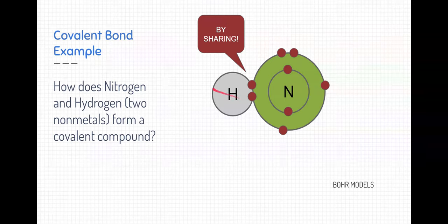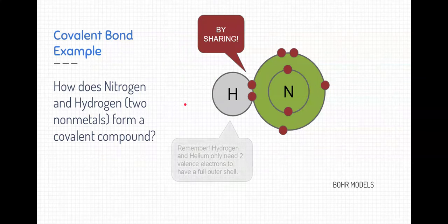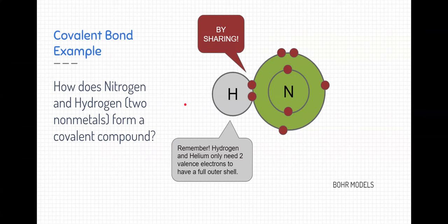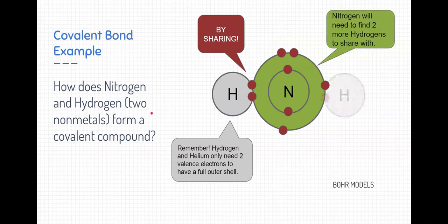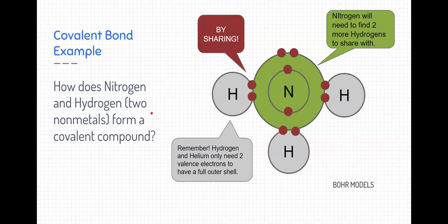Well, in this case, hydrogen becomes full. But remember, hydrogen only needed two valence electrons to become full. What about nitrogen? Nitrogen's not quite full. It doesn't have its octet yet. Well, that's because it needs to find a few more hydrogens to fill up those spots. So this is an example of a covalent compound, NH3.